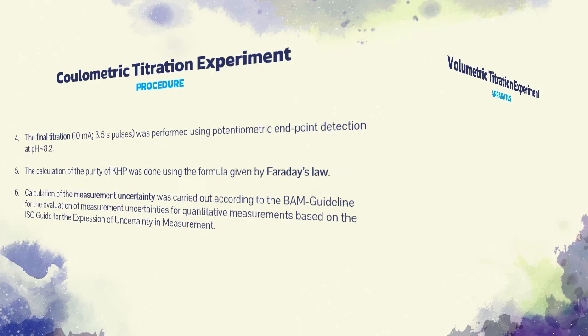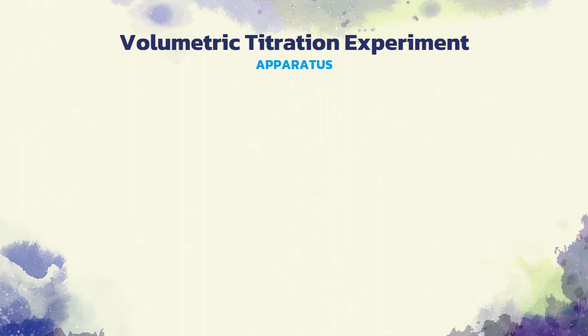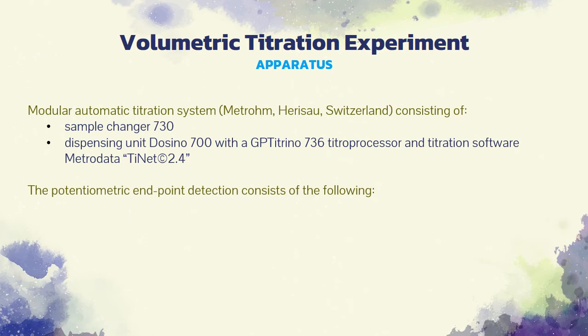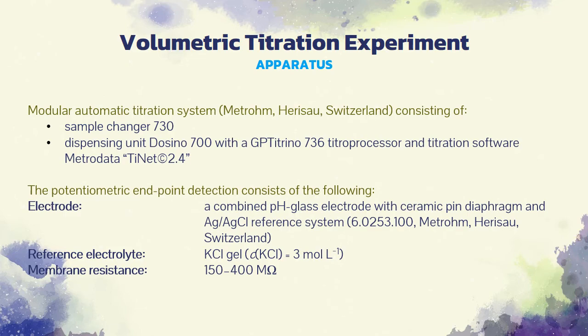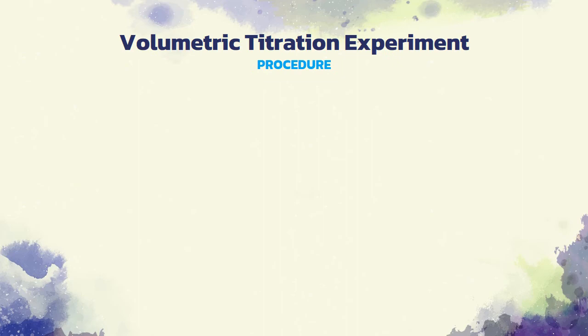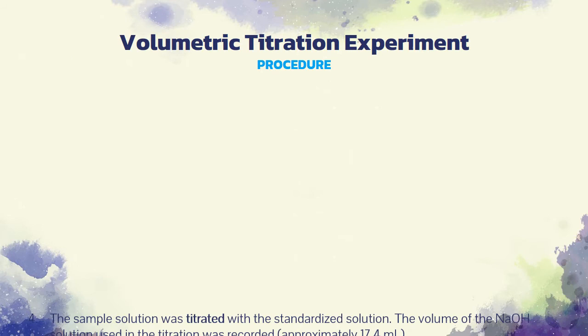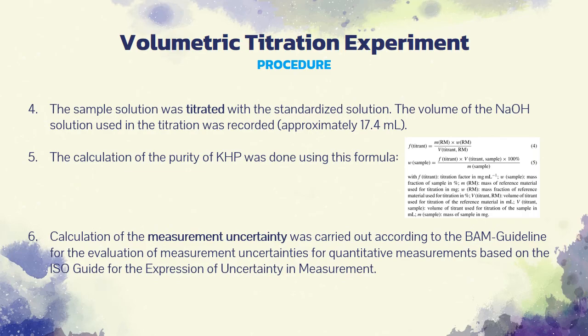For the volumetric titration experiment, titrations were carried out using a modular automatic titration system consisting of a sample changer and a dispensing unit. For potentiometric endpoint detection, a combined pH glass electrode and silver-silver chloride reference system was used. The experimental procedure involves the preparation of the titrant, calibration of the apparatus, drying of the sample, titration of the sample, and calculation of purity and measurement uncertainty.